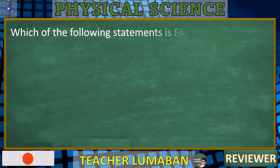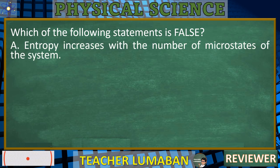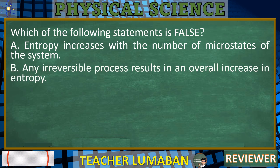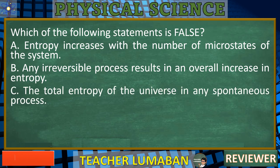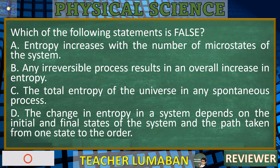Which of the following statements is false? A. Entropy increases with the number of microstates of the system. B. Any irreversible process results in an overall increase in entropy. C. The total entropy of the universe in any spontaneous process. D. The change in entropy in a system depends on the initial and final states of the system and the path taken from one state to another. In the next 5 seconds, select the best response from the available options.